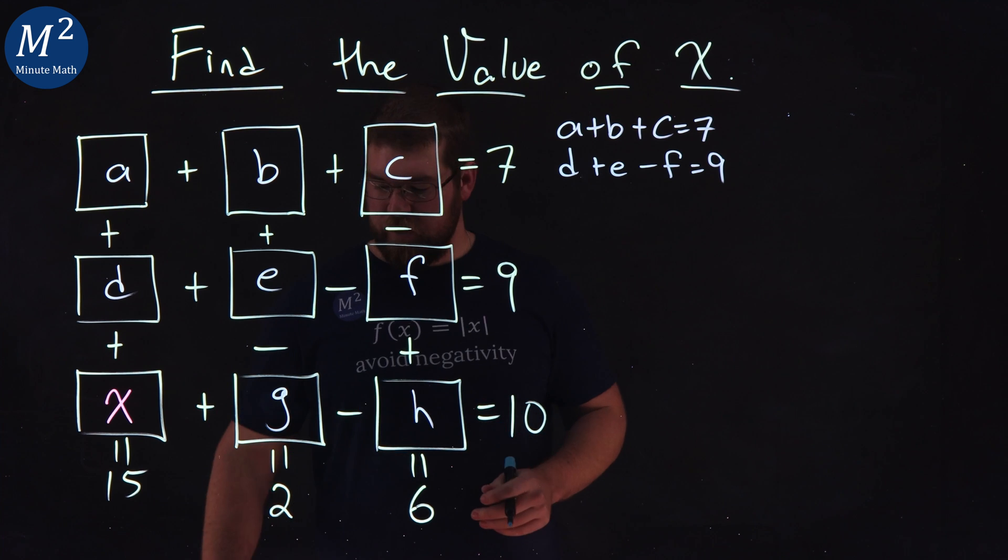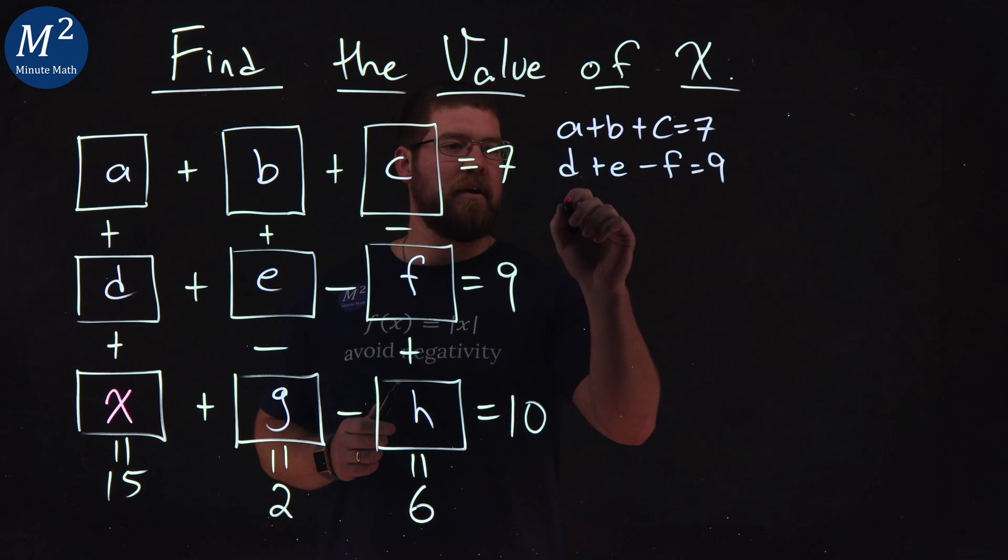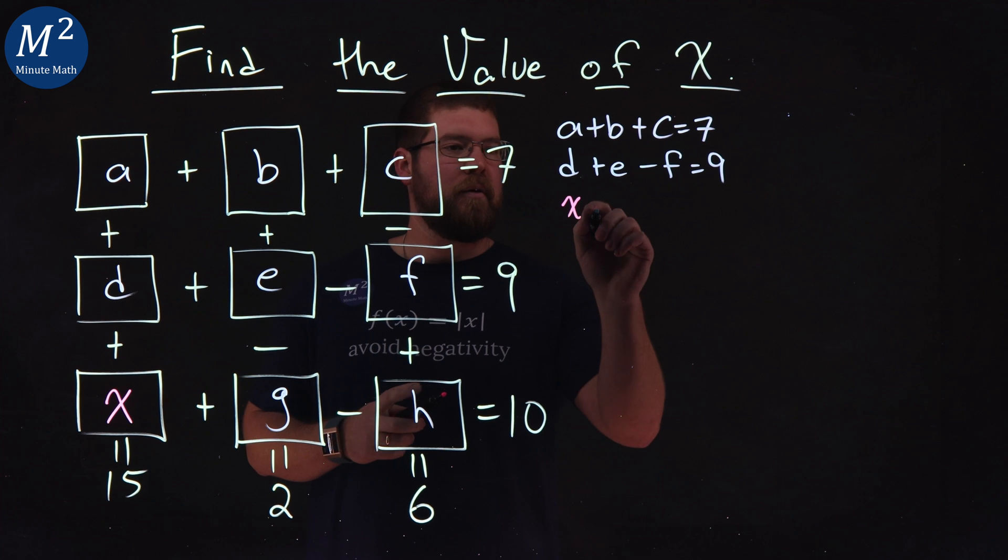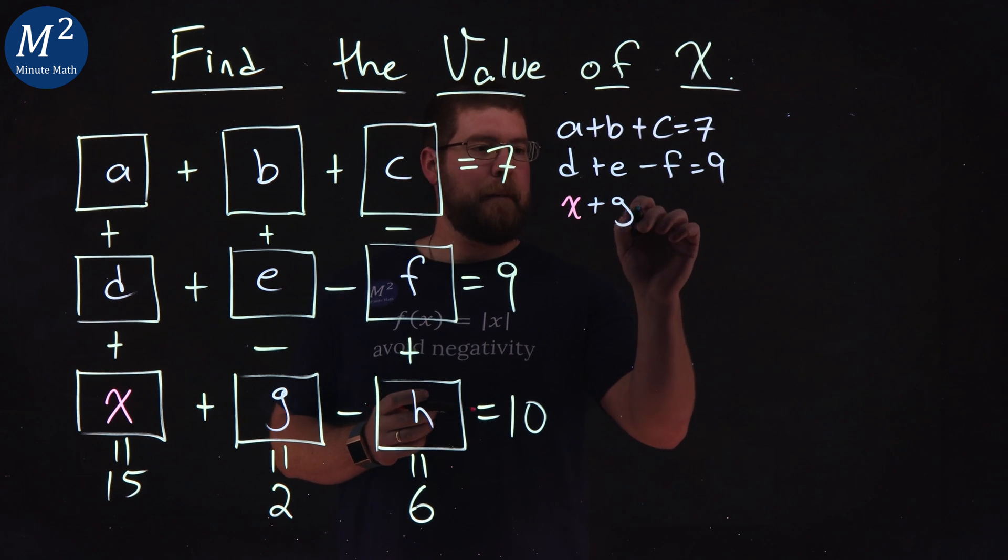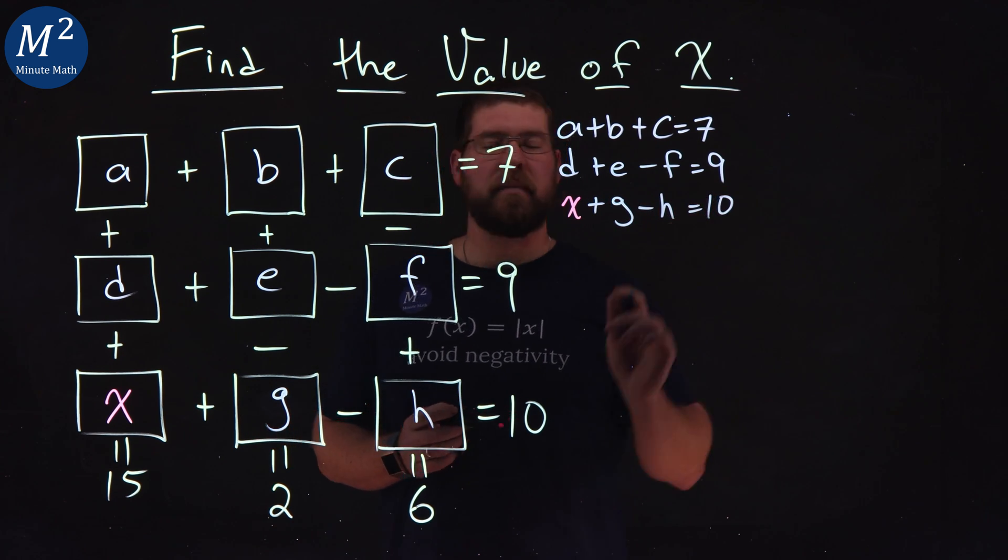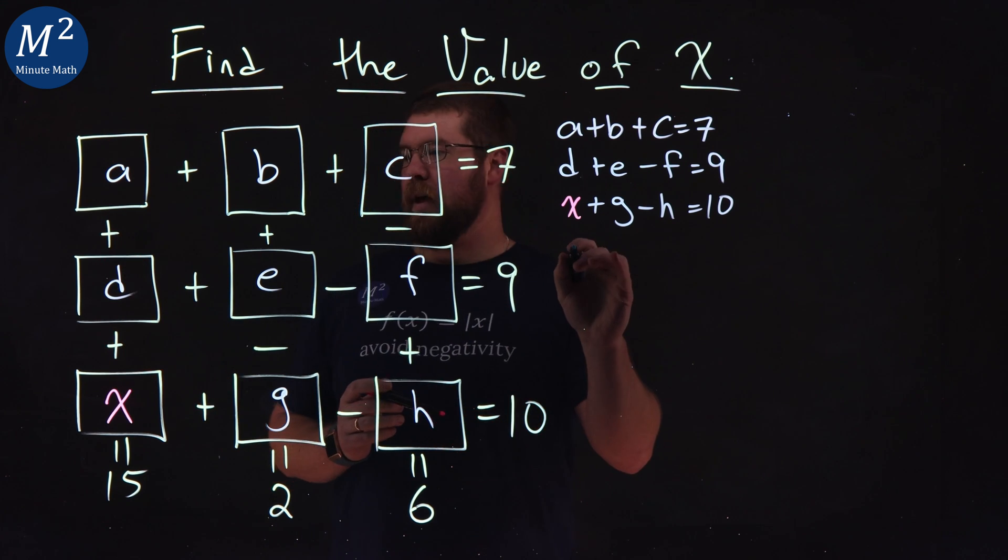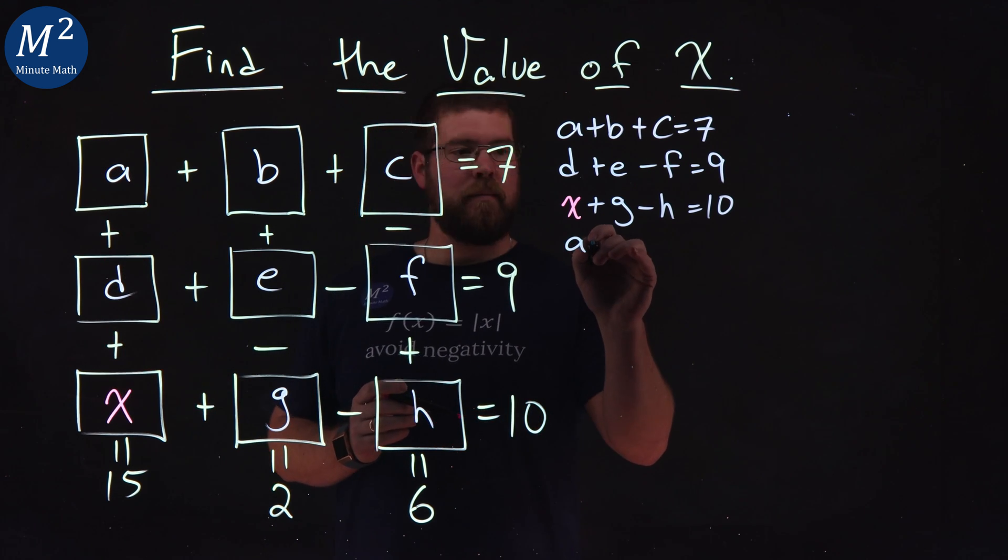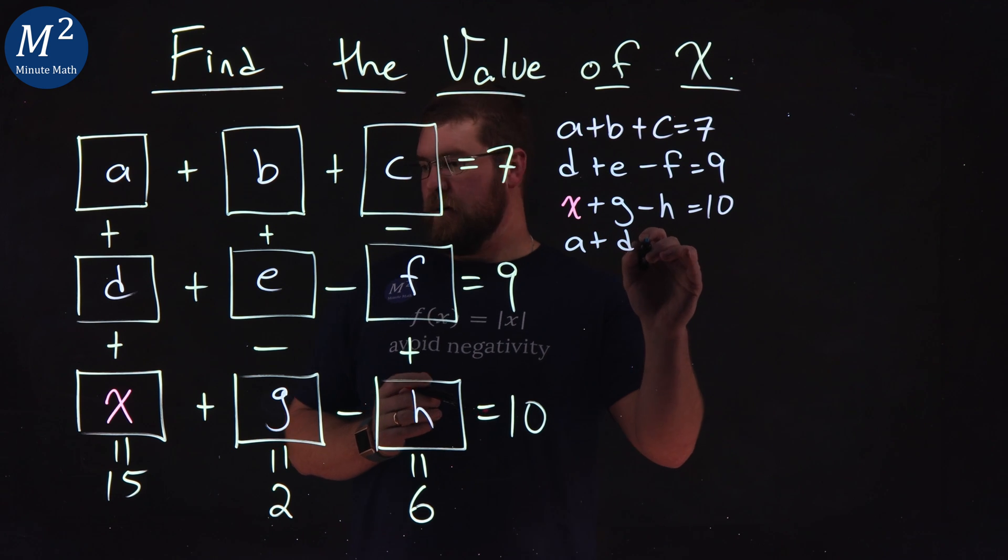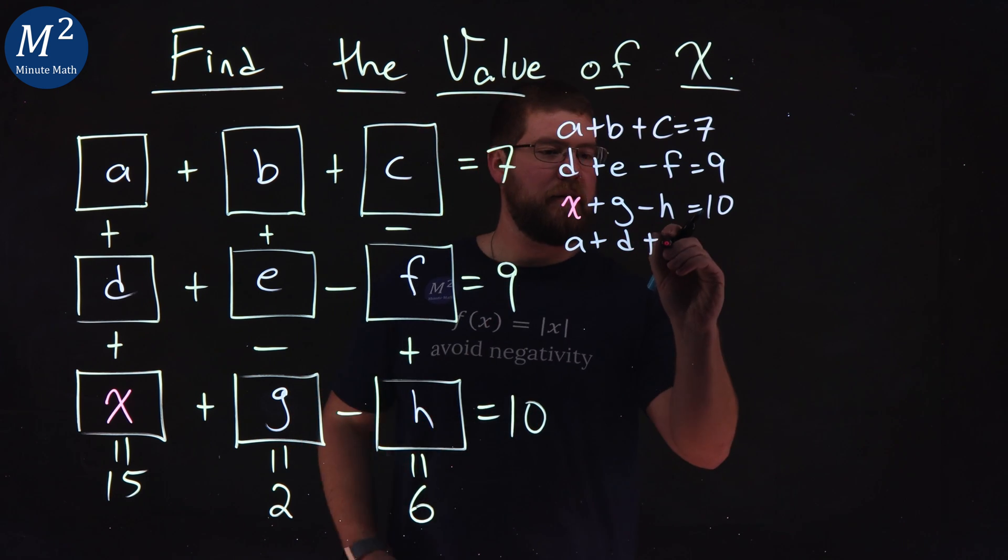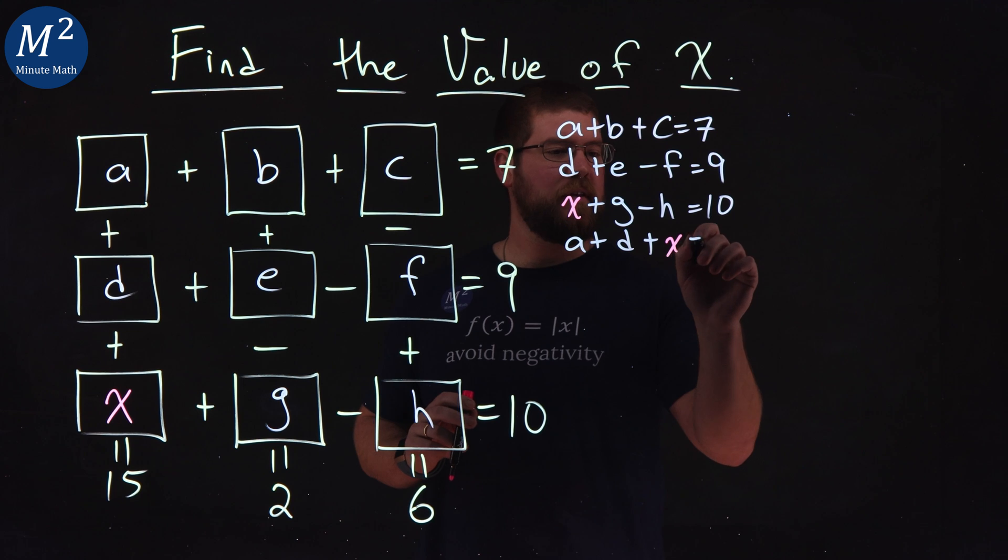X plus G plus H. Let's keep X in pink so we can see that. We have X plus G minus H is equal to 10. And now let's go vertically. Let's make sure all the vertical ones are here. We have A plus D plus X here is equal to 15.